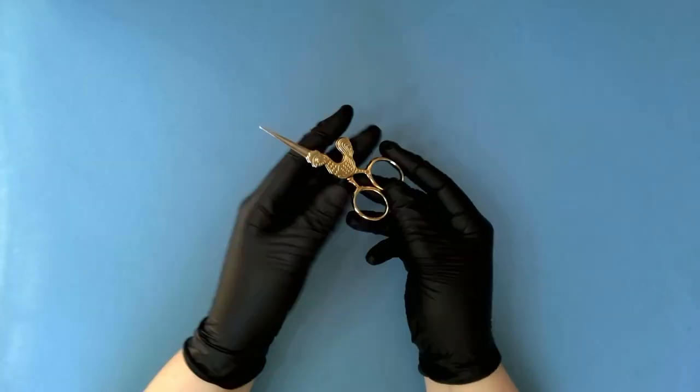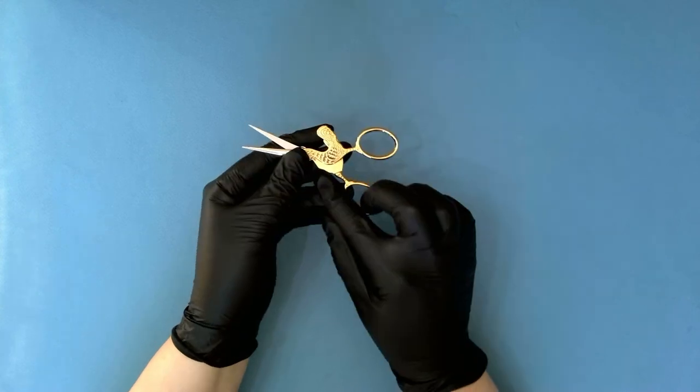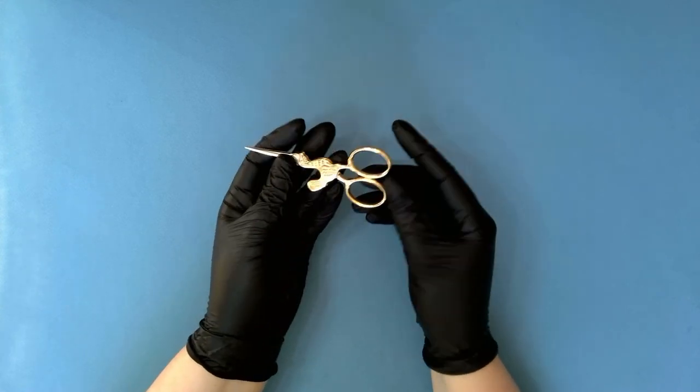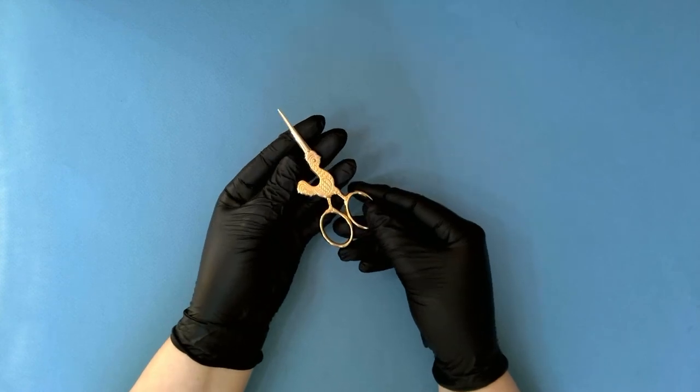Next we have these small embroidery scissors here that aren't appropriate for permanent labeling because they are too small and difficult to write on. These are good options for using a paper tag with.